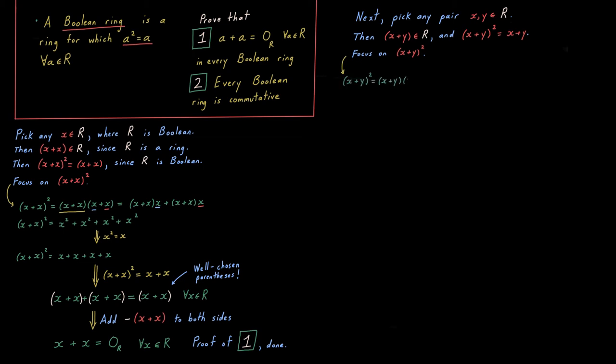As before, focus on that key term, that squared term, and rewrite it using distributive law obedience, both left and right. Again, just like we did before. This time we got a Y in there, but it's going to come out to be X squared plus YX plus XY plus Y squared, which again equals X plus Y. So we're going to set all that equal to X plus Y.